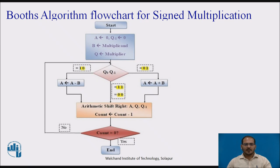If Q0 and Q-1 is 0-1, perform A plus B and an arithmetic right shift of A, Q, and Q-1. If Q0 and Q-1 is 1-0, perform A minus B and then a right shift of A, Q, and Q-1. The count value depends upon the size of the multiplier — if the multiplier is 5 bits, the count value is 5. This is the flowchart for signed multiplication.